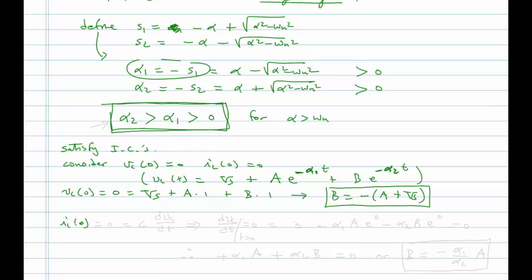Next we consider IL at t equals zero, which equals zero, and that equals C·dVC/dt. Evaluating dVC/dt at zero: the derivative of VS is zero, then minus alpha_1·A·e^0 minus alpha_2·B·e^0 equals zero. Therefore minus alpha_1·A minus alpha_2·B equals zero, which gives B equals minus alpha_1 over alpha_2 times A.